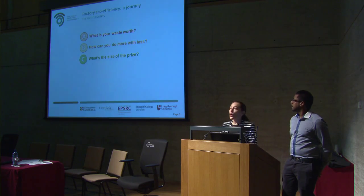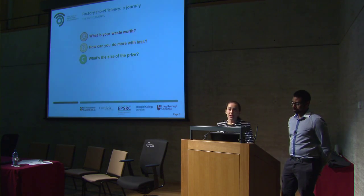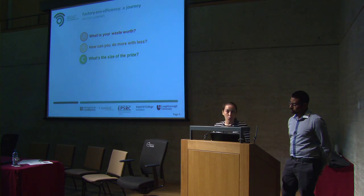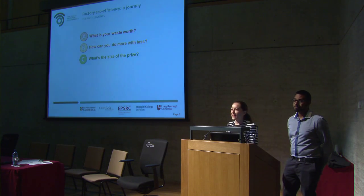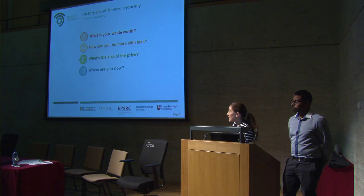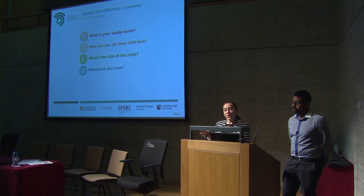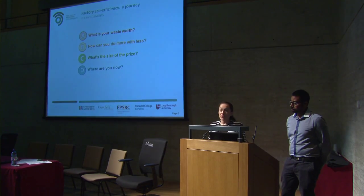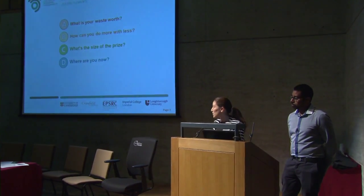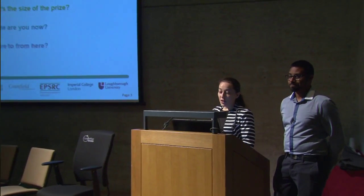The third element of the toolkit is asking: what's the size of the prize? In this part we start being more quantitative and try to understand what is the size of the benefits and what kind of targets you should be setting — to get a real sense of how important eco-efficiency can be for you. The fourth element is where are you now? — understanding how well you're currently doing in terms of eco-efficiency and performance, using qualitative and quantitative tools. Finally, the fifth element asks: where to from here? What are the next steps, and how do I make eco-efficiency a systematic approach to the way we produce products?